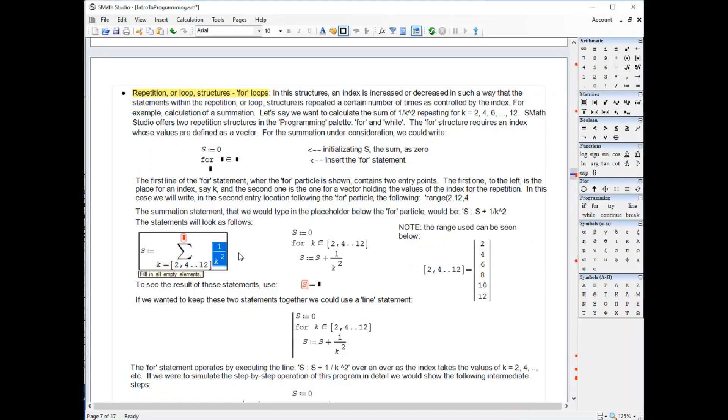This is the representation of the summation that I'm trying to calculate. I'm trying to calculate the sum of 1 over k squared when k takes the value of 2, 4, 6, 12, and so on. This is just an algebraic representation. I'm going to eliminate it, and this is the actual way that we're going to do it.